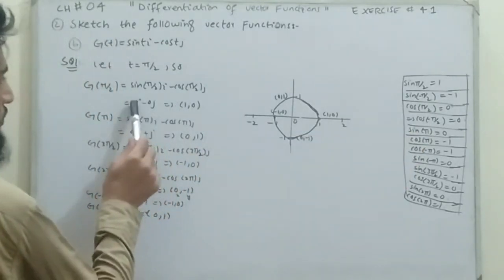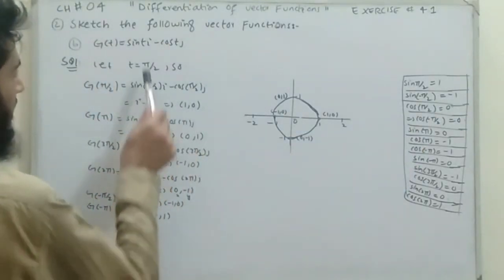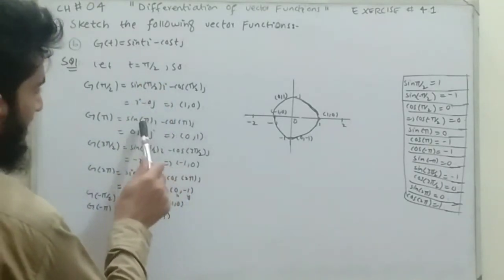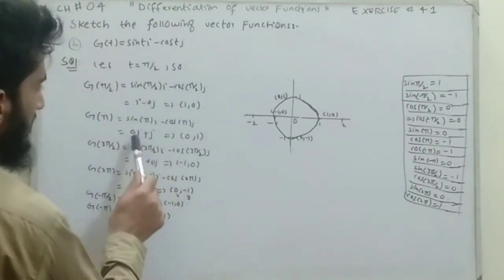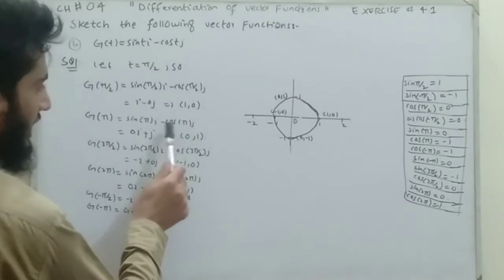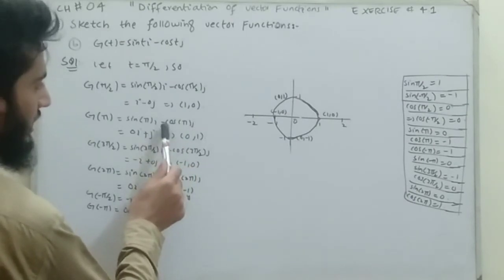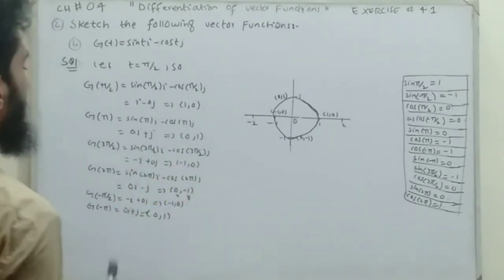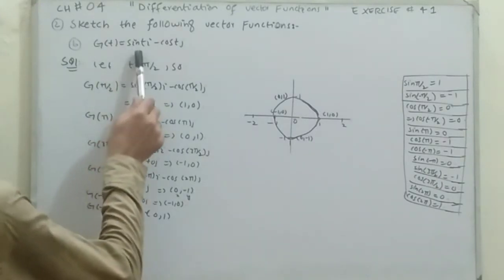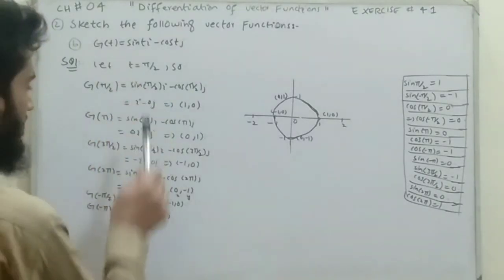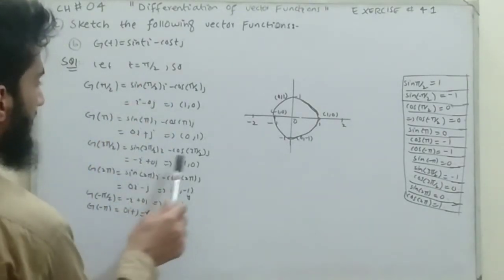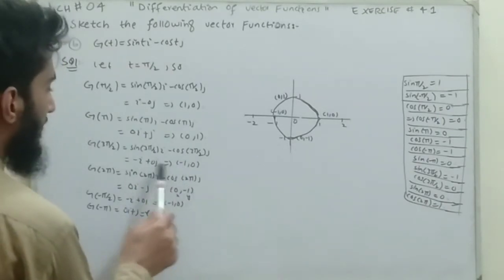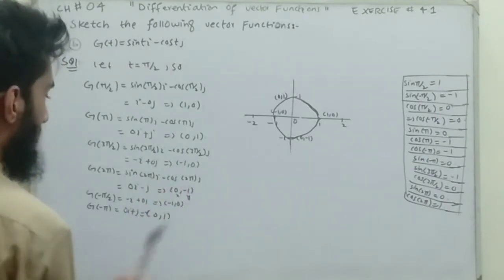So the ordered pair for t = π/2 is (1, 0). By putting t = π: sin(π) = 0 and cos(π) = -1; negative times negative gives positive 1, so the ordered pair is (0, 1). For t = 3π/2: sin(3π/2) = -1, giving the i-component -1, and cos(3π/2) = 0, giving the ordered pair (-1, 0).